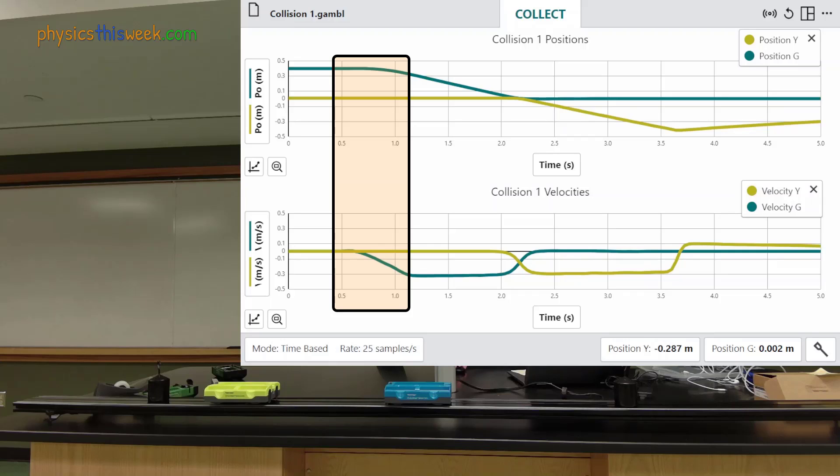This shows up in the velocity graph as a downward sloping line. The position line has a slight curve here too but it is a bit hard to see at this scaling of the graph. At about 1.1 seconds I stopped pushing the cart.